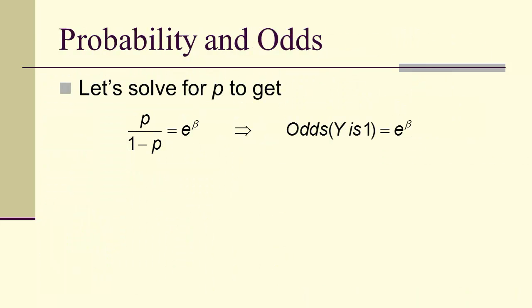Now let's solve for p in our logit model. And p over 1 minus p will be e to the beta. And so the odds of y being 1 is e to the beta. We've seen that already.